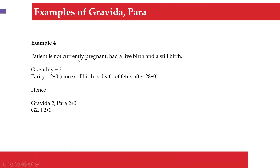Example four: a patient who is not currently pregnant but had a live birth and a stillbirth. Not currently pregnant, so the total pregnancies are two — gravida 2. For parity, a stillbirth by definition is any intrauterine fetal death occurring past 28 weeks. Therefore it counts as parity, not a miscarriage. Both the live birth and the stillbirth count as parity, giving P2+0. Written as G2 P2+0.